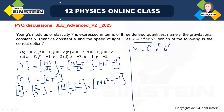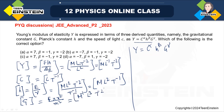Now, the dimension for G: we know this is F times distance squared, divided by mass squared. If you write this out, you will get M to the power minus 1, L cubed, T to the power minus 2. This is the dimension for capital G, the gravitational constant.